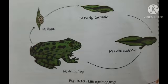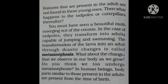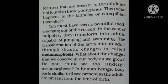So the earlier stages of the frog are totally different from the adult — this is the similarity between the silkworm and the frog. You must have seen a beautiful moth emerging out of the cocoon, and in the case of the tadpole, it transforms into an adult capable of jumping and swimming. So the transformation of the larva into an adult through drastic changes is called metamorphosis.